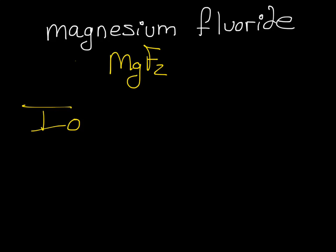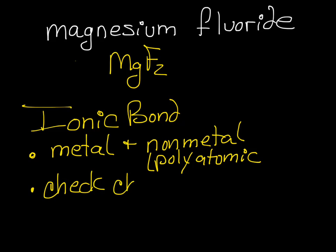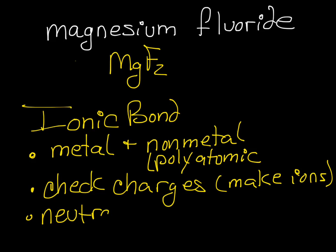What you need to remember, and if you haven't written this down, you might want to now: for an ionic bond, you're going to have a metal and a nonmetal. It could also be a metal and a polyatomic. So when you have an ionic bond, it'll be metal, nonmetal, or a polyatomic, you have to check charges. Another way to write that is you need to make ions. And then, the last thing you need to do is neutralize, or cross out the charges.